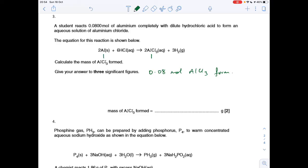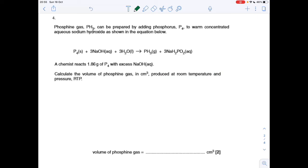So all we need to do is work out the MR of aluminium chloride, and then we're going to use that to work out the mass. So MR of aluminium chloride is 133.5, so mass is moles times MR, so that's 0.08 multiplied by 133.5. We've got to give our answer to three significant figures, and that is 10.7.